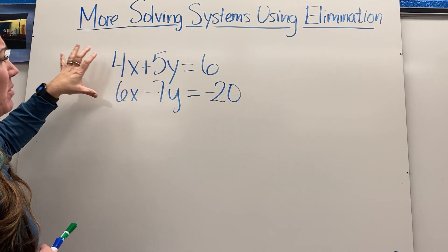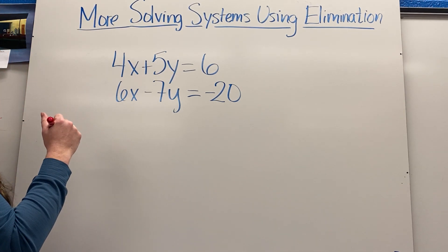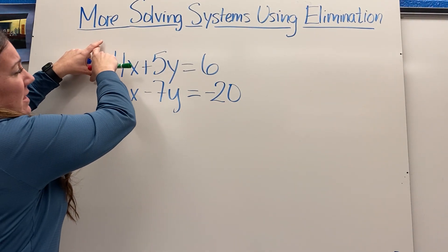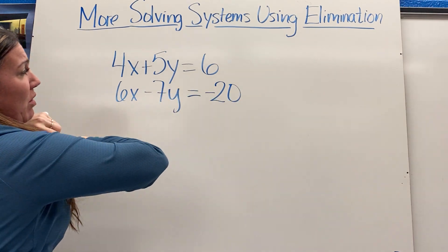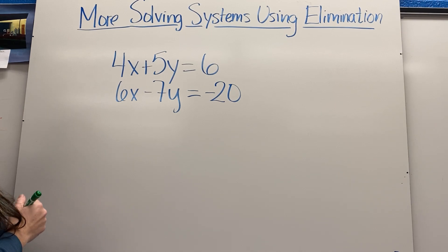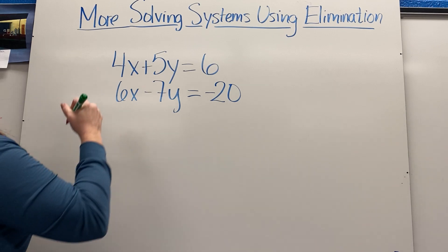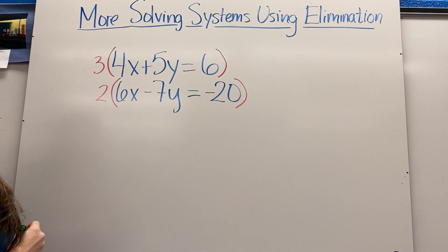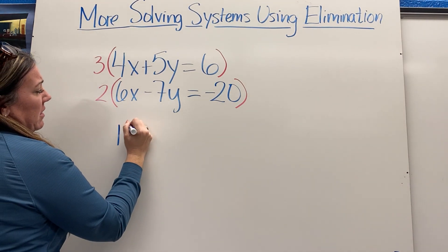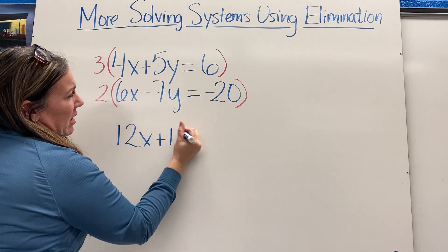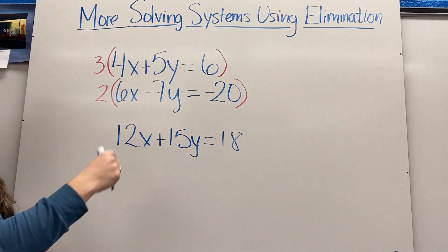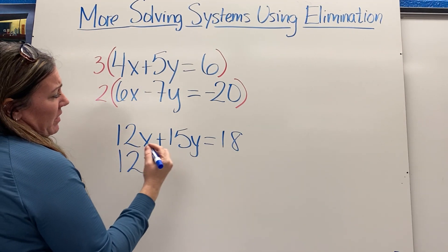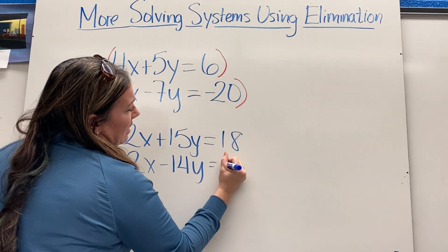It doesn't matter whether you focus on x or y. I'm going to find the least common multiple of 4 and 6, which is 12. So I'll multiply the top equation by 3 and the bottom by 2. That gives: 3 times 4x is 12x, 3 times 5y is 15y, 3 times 6 is 18. For the bottom: 2 times 6x is 12x, 2 times negative 7 is negative 14y, and 2 times negative 20 is negative 40.